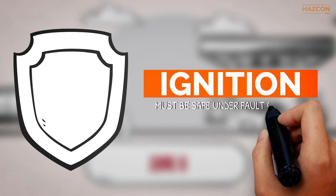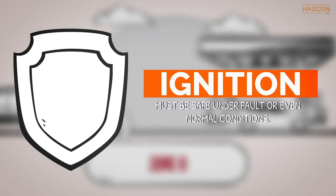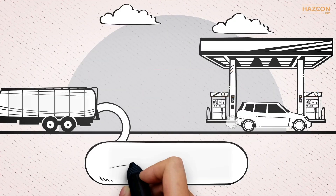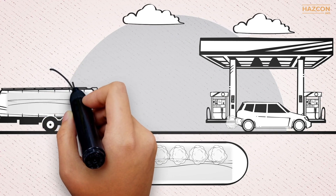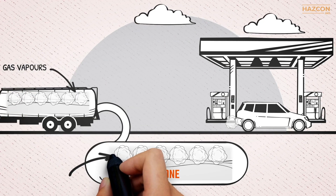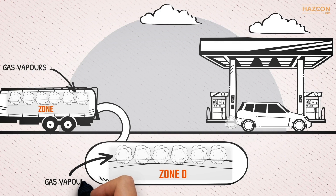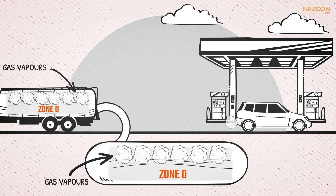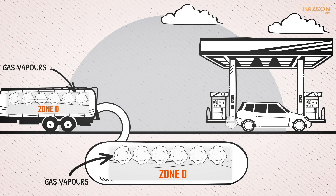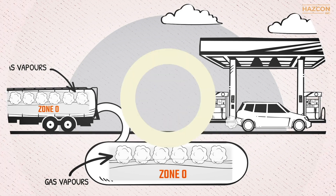Zone 0 is an area where an explosive gas-air mixture is continuously present or present for a long time. Therefore, devices that can pose an ignition risk must be safe under fault or even normal conditions. In this illustration, we have a tank containing flammable liquid. Above the flammable liquid inside the tank, and given an ambient temperature above the flash point of the liquid, gas vapors can be present. This area is considered Zone 0 because the hazard exists continuously.